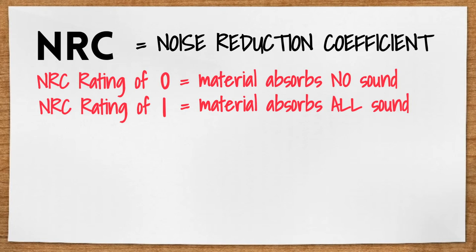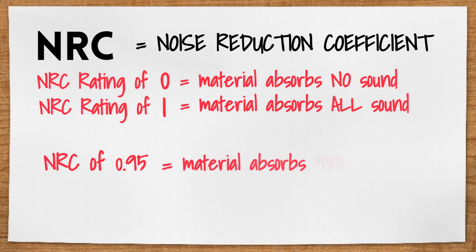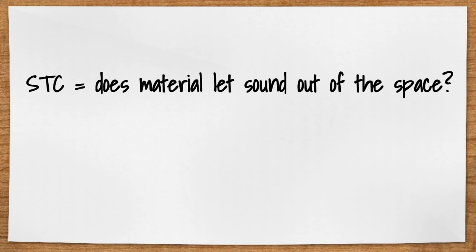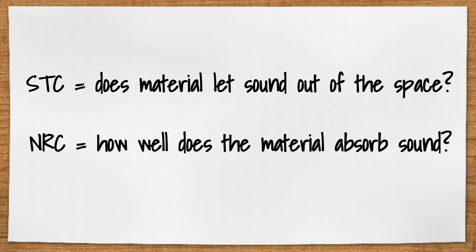A material with an NRC rating of 0.95 means that the material absorbs 95% of the sound in the space and reflects 5%. So to recap: STC has to do with whether or not a material or assembly lets sound leak out of the space to the next room, and NRC has to do with how well a material absorbs sound and keeps the room quiet.